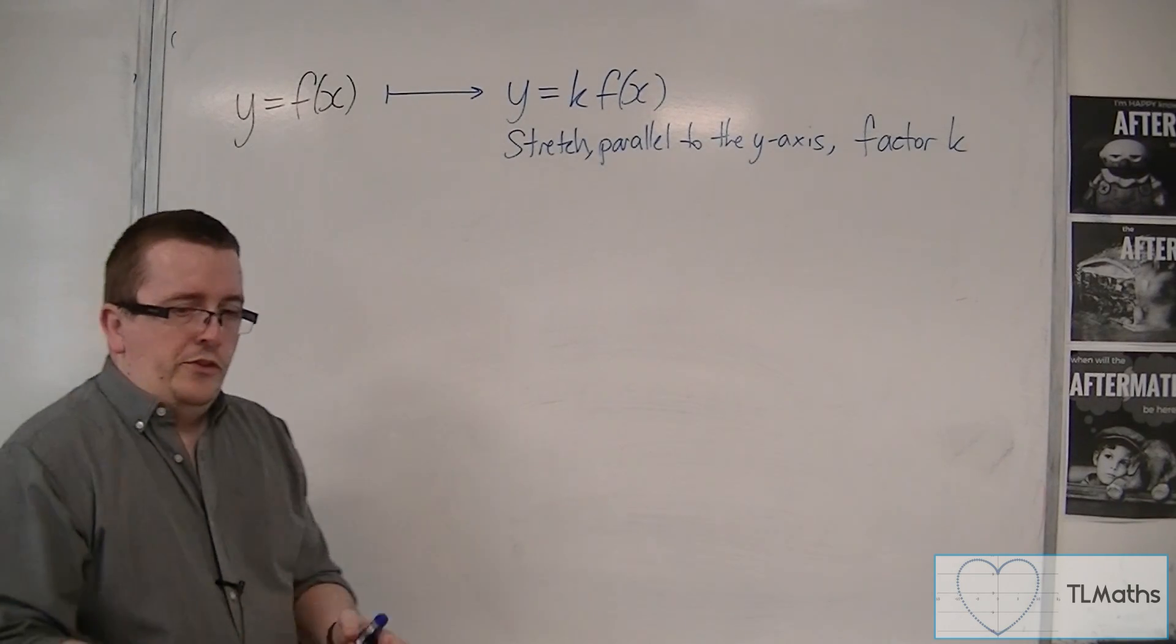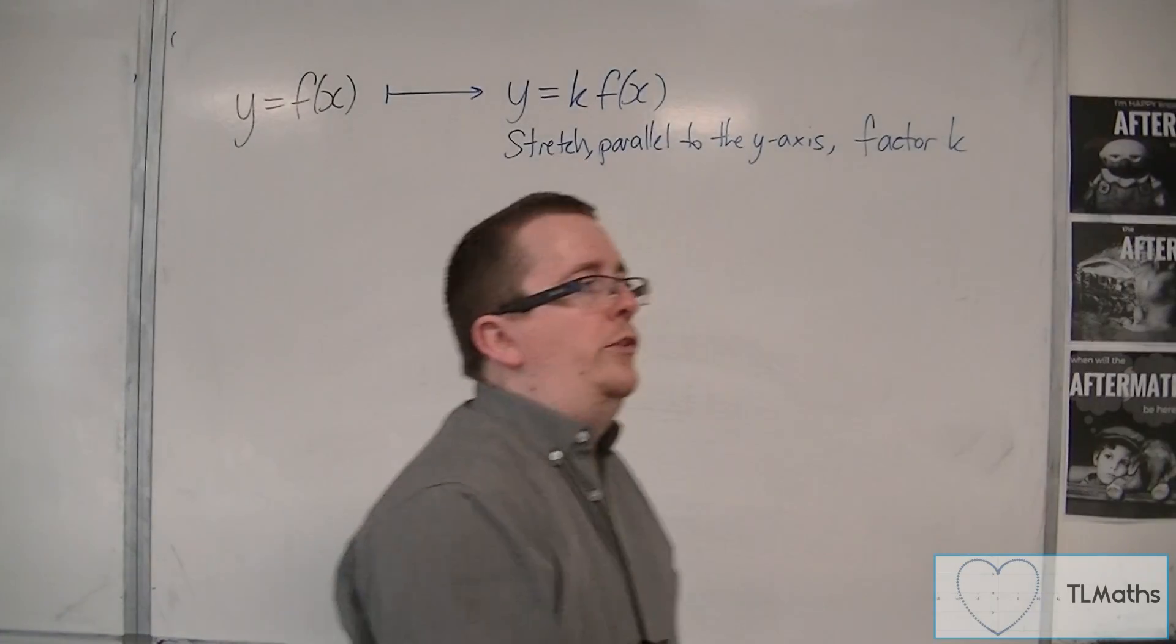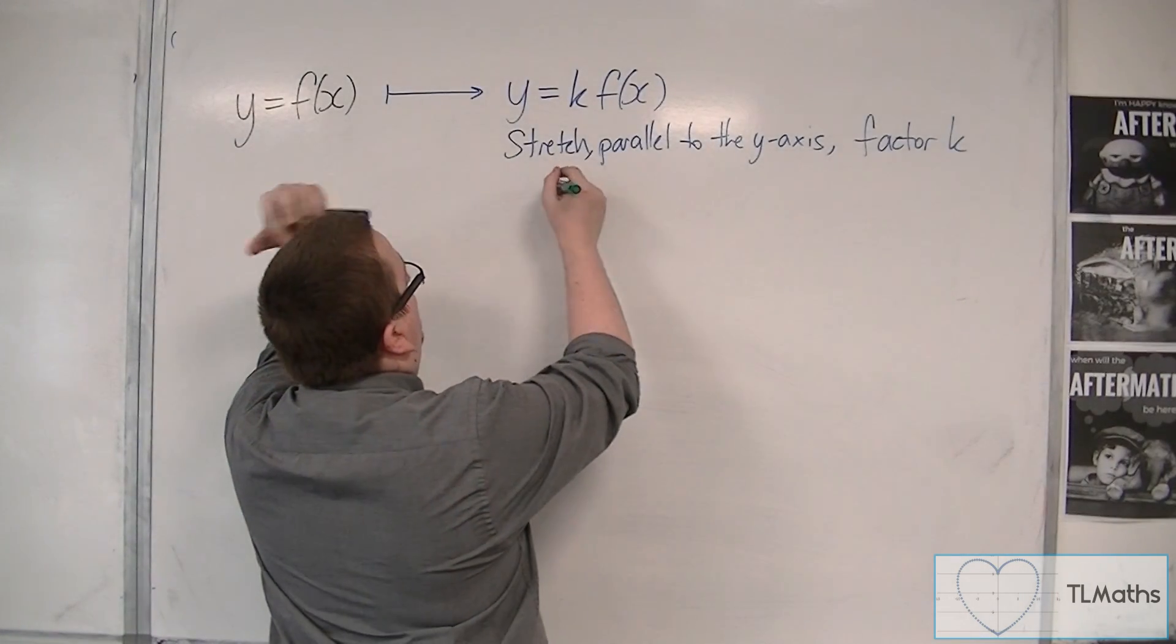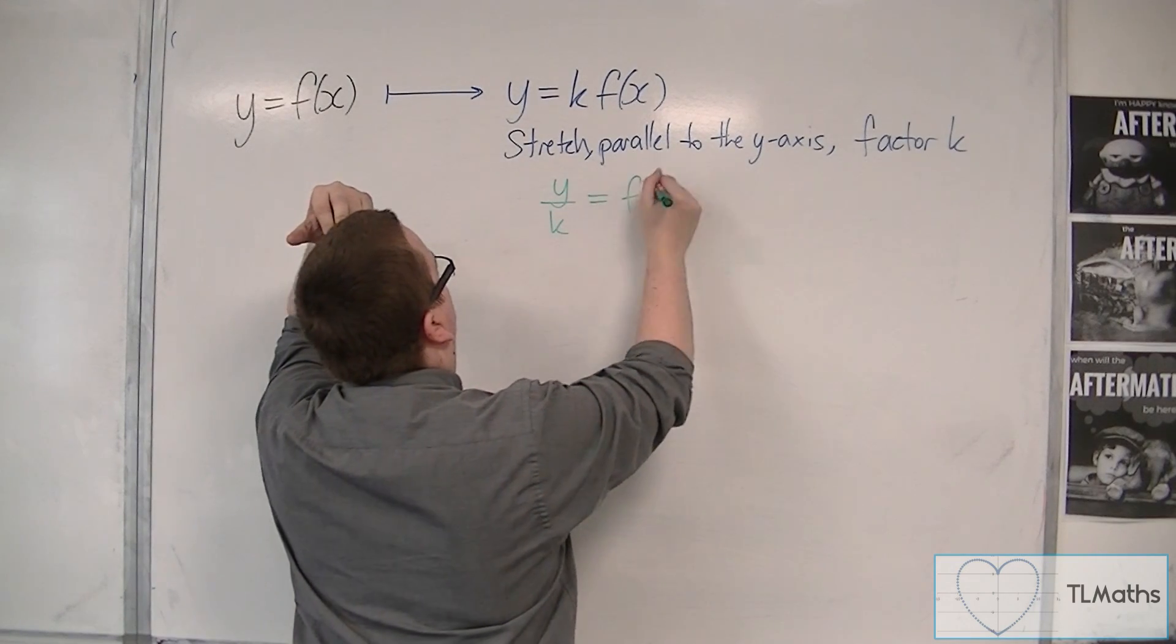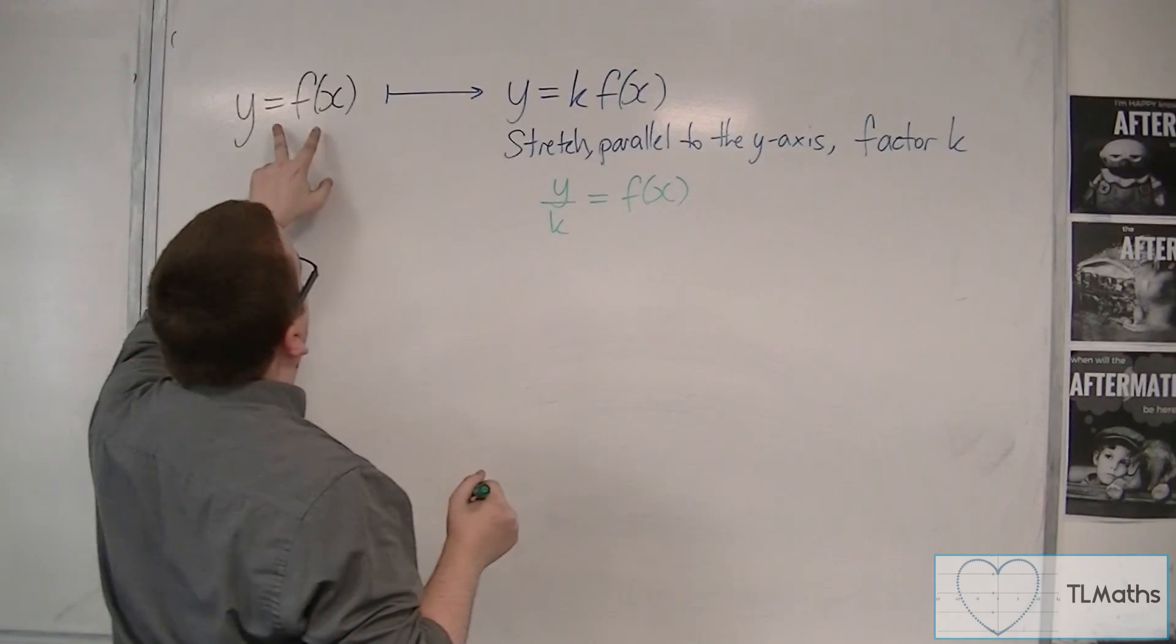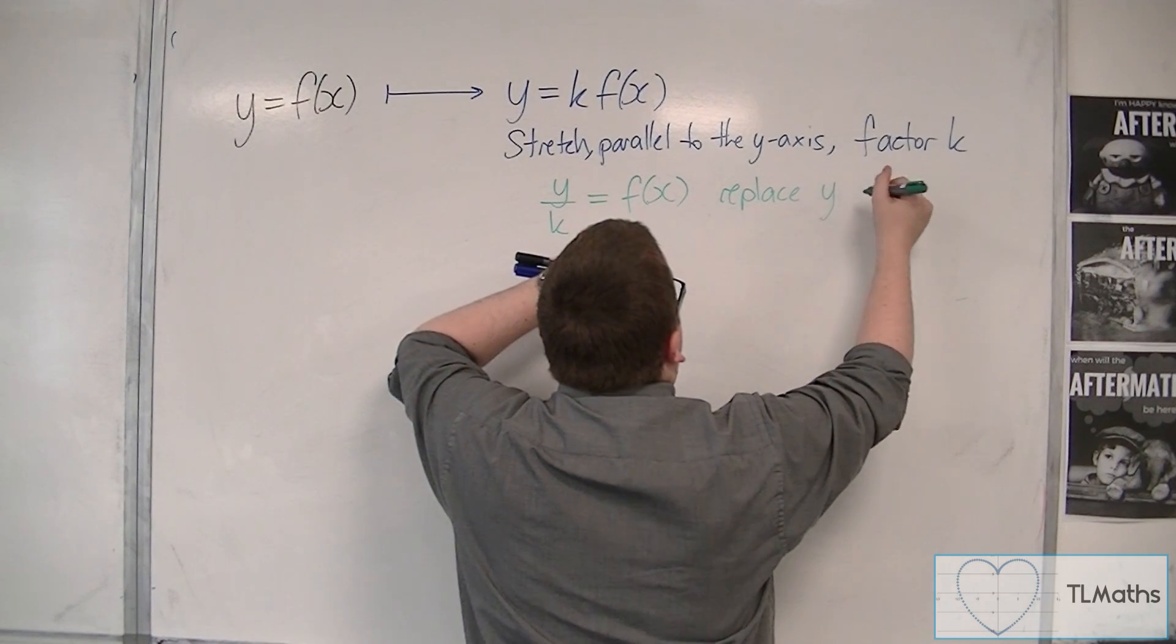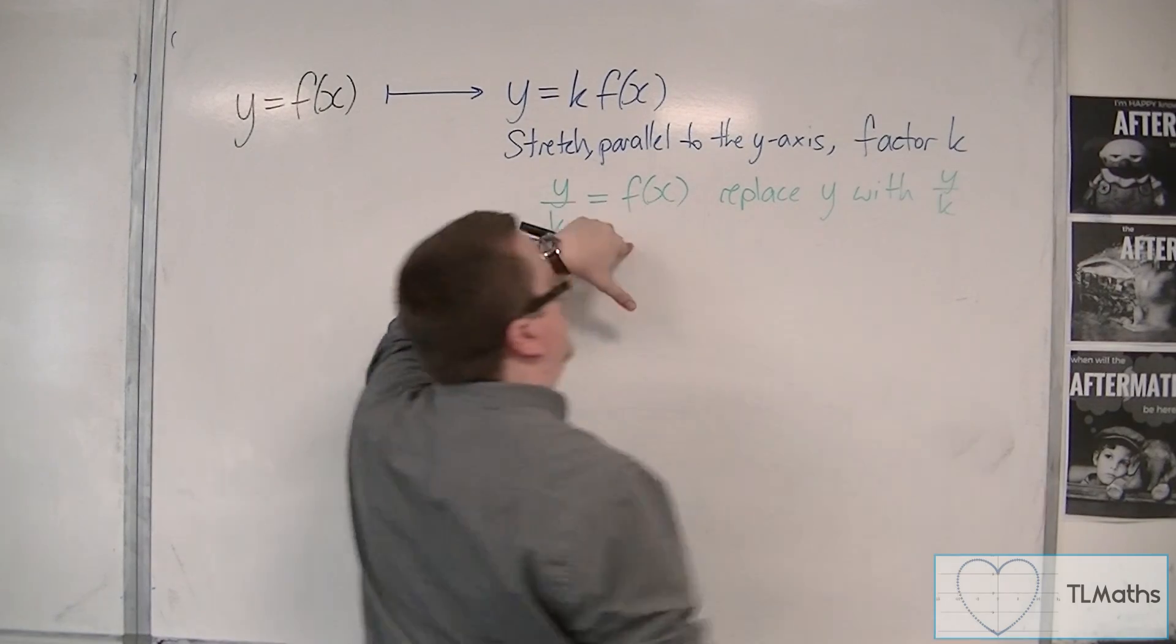Now, to relate it back to what we saw with the translations, what you can do is you can divide both sides by k. And then you can identify that if you're going from there to there, you're effectively replacing all the y's with y over k.